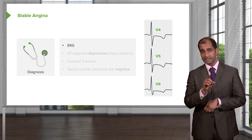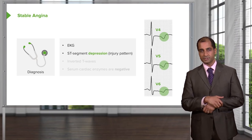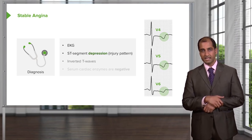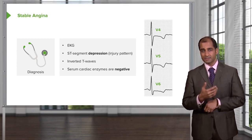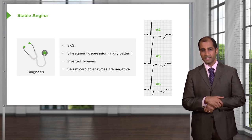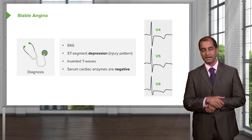What about cardiac enzymes — elevated or normal? Normal. So: ST segment depression, inverted T wave, serum cardiac enzymes negative. The gold standard cardiac enzyme — Troponin I. I'm repeating this on purpose.